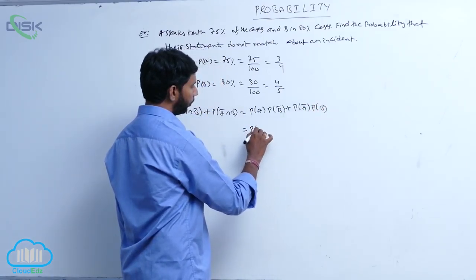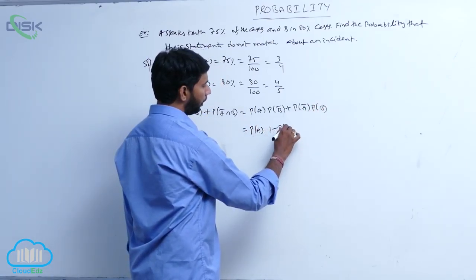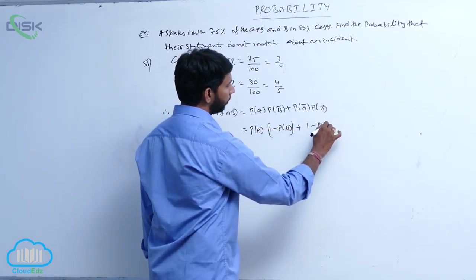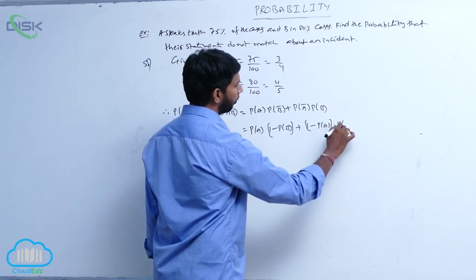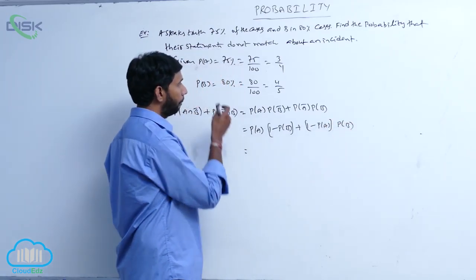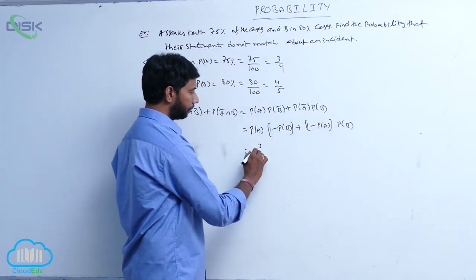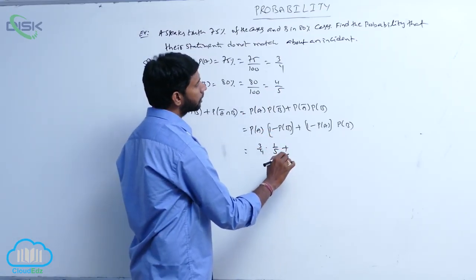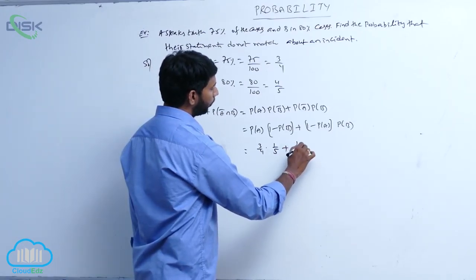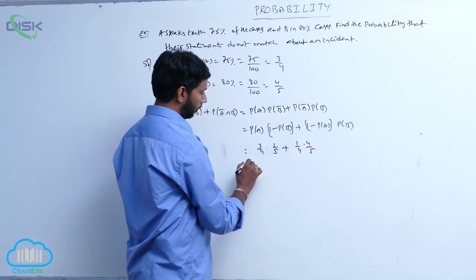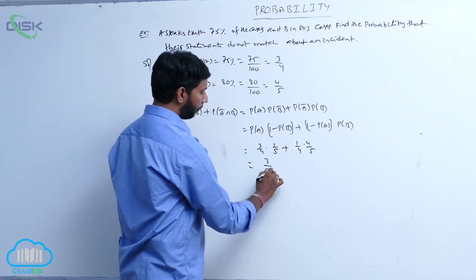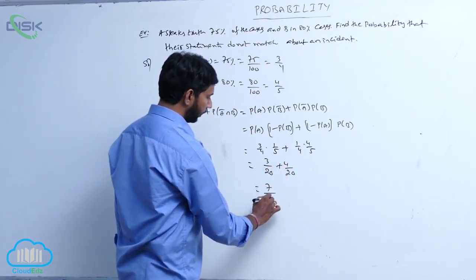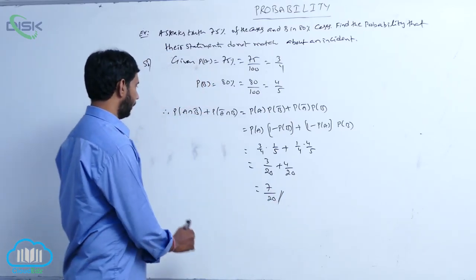This is equal to P of A into 1 minus P of B, plus 1 minus P of A into P of B. Substituting: 3 by 4 into 1 minus 4 by 5, that is 1 by 5, plus 1 by 4 into 4 by 5. That equals 3 by 20 plus 4 by 20, which is 7 by 20.